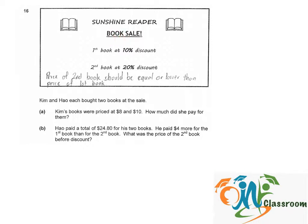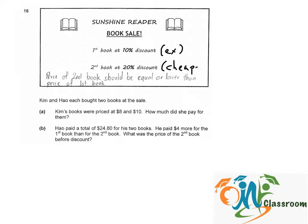We have a book sale here. The first book is sold at a 10% discount, and if you buy the second book, you'll be given a 20% discount. However, there is a condition: the price of the second book should be equal to or lower than the price of the first book. That means the more expensive book gets a 10% discount and the cheaper one gets a 20% discount.